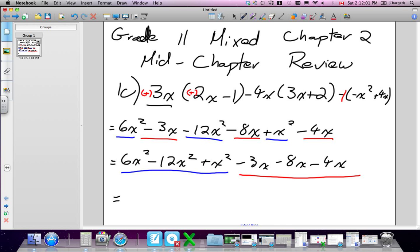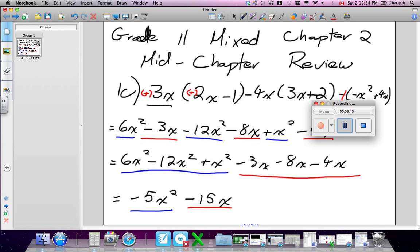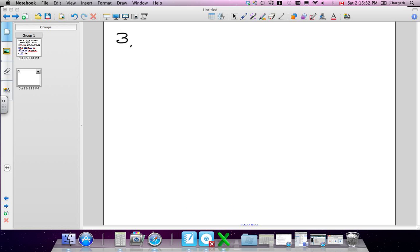So 6 minus 12 plus 1 is negative 5x squared. And my other terms, really all I have to do because my variables are the same, I just got to look at my coefficients. Negative 3 minus 8 minus 4 is negative 15x. Does that make sense how to put the signs in front of them?